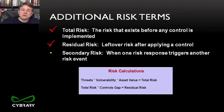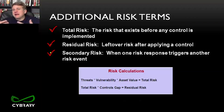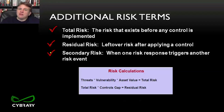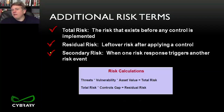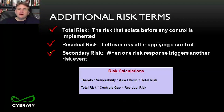Secondary risk is when one risk response triggers another risk event. When we talk about risk, threats, vulnerabilities, and the value of the asset all combine to give us the total risk. These are conceptual calculations. When we take the total risk and apply an element of control — called the controls gap — that gives us the residual risk. Just a few extra additional terms when dealing with risk.